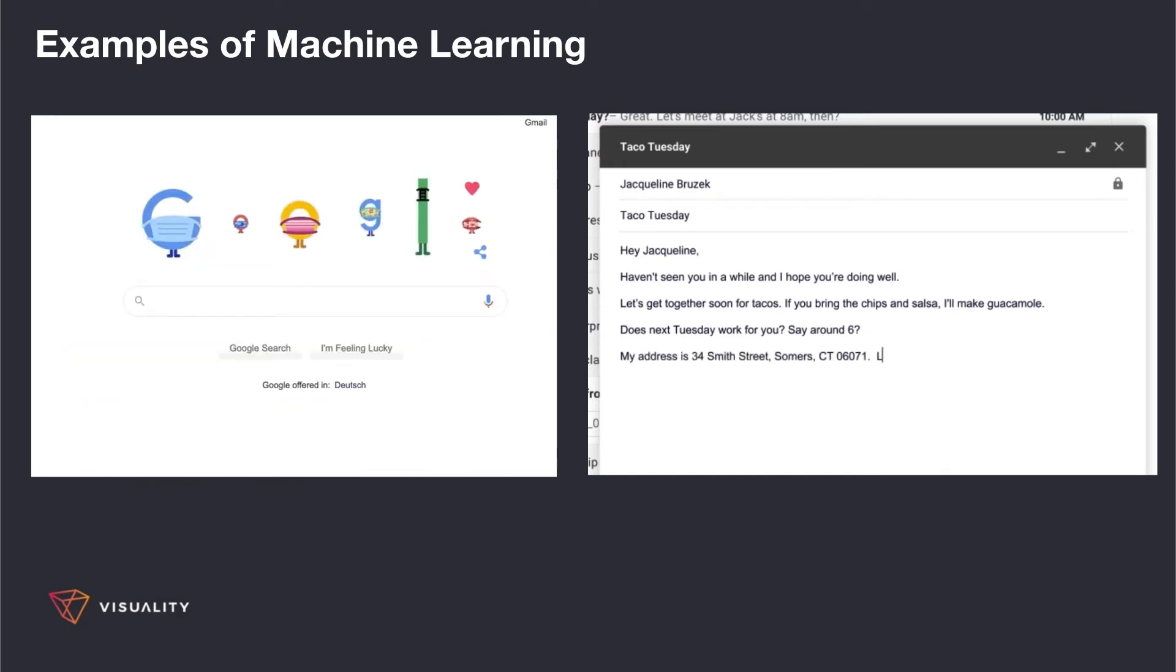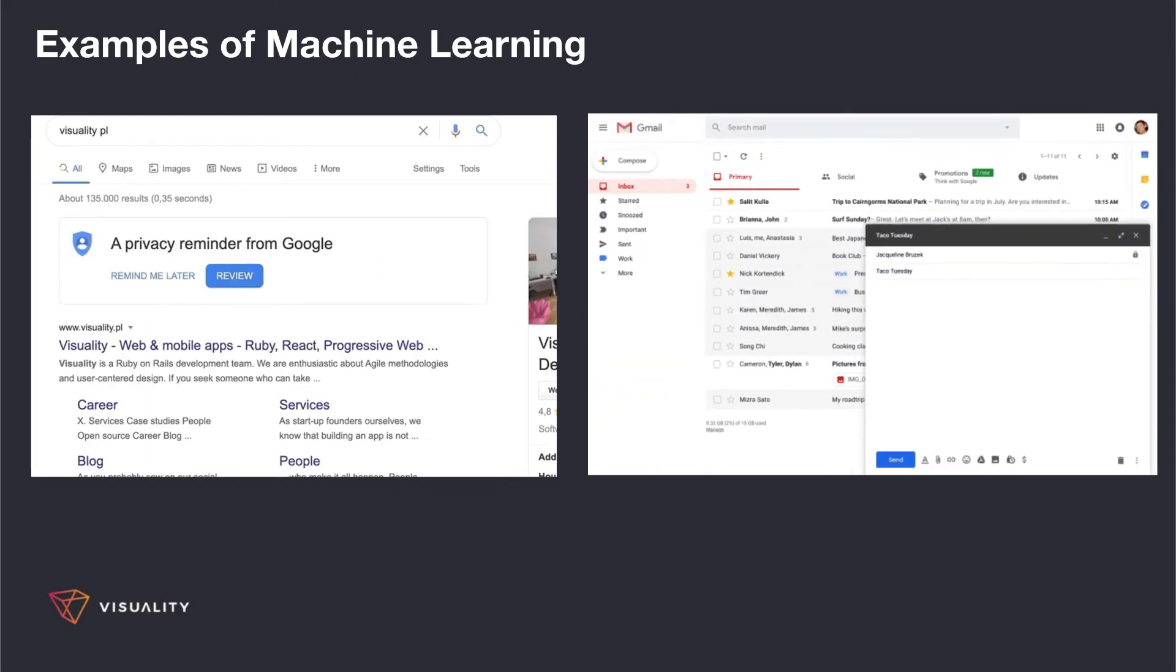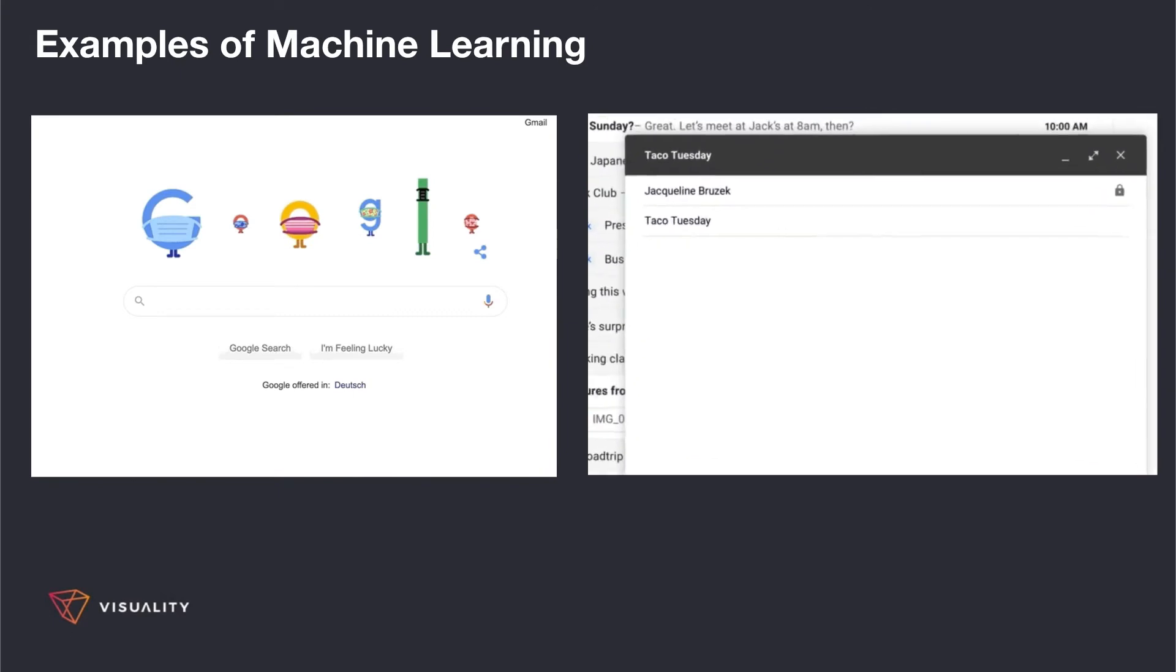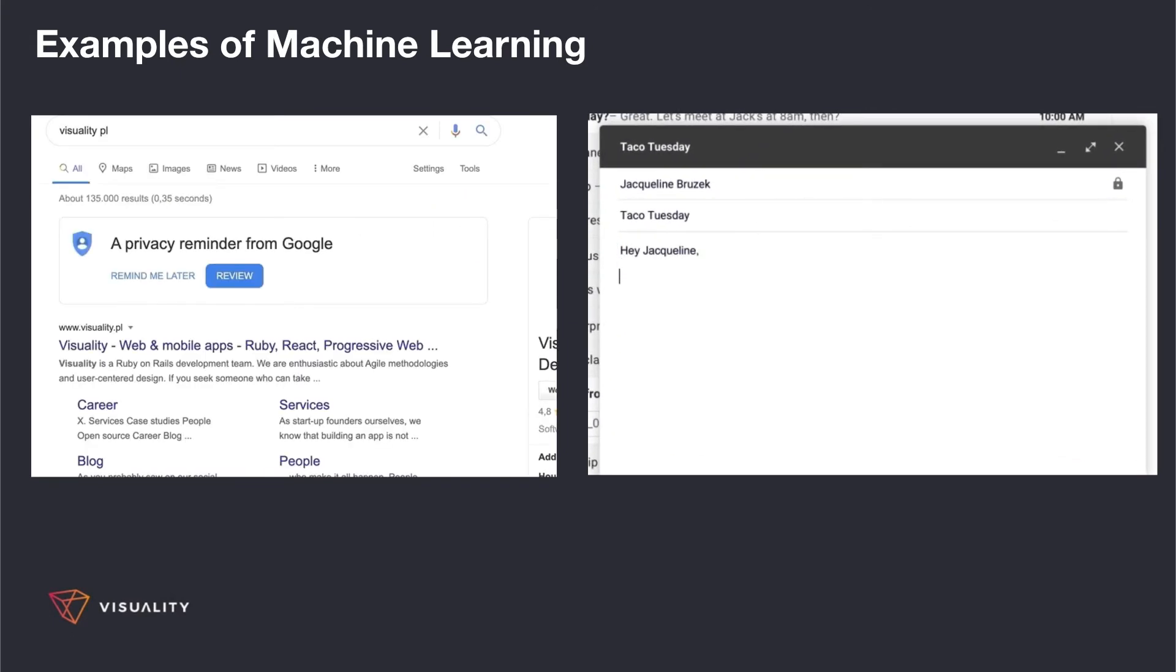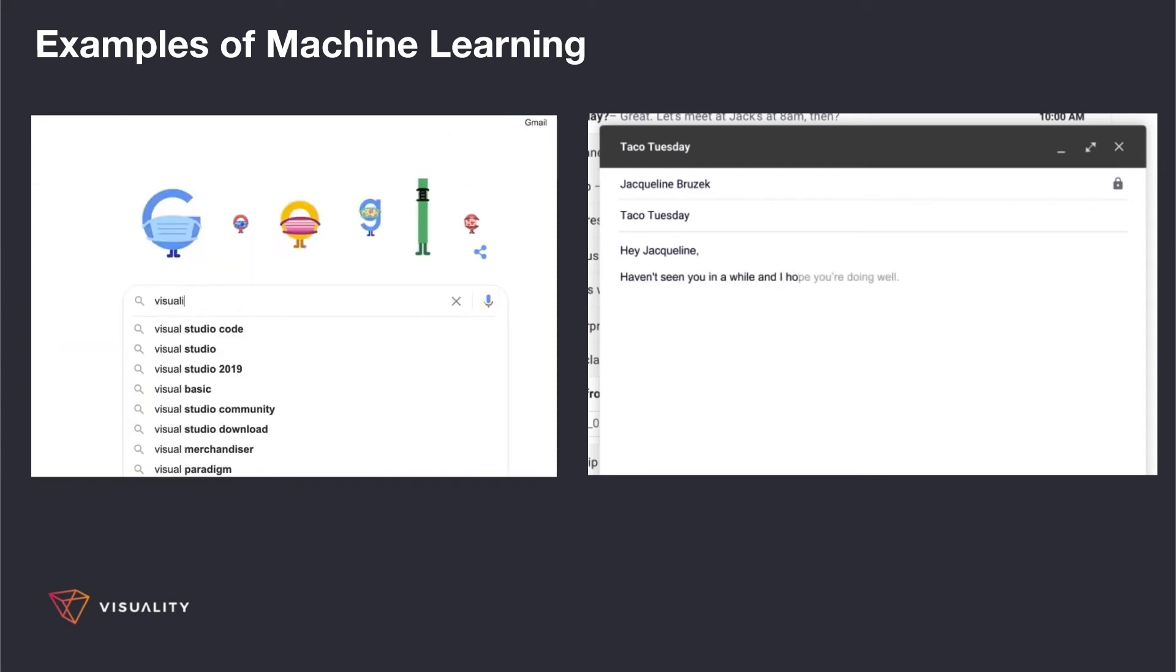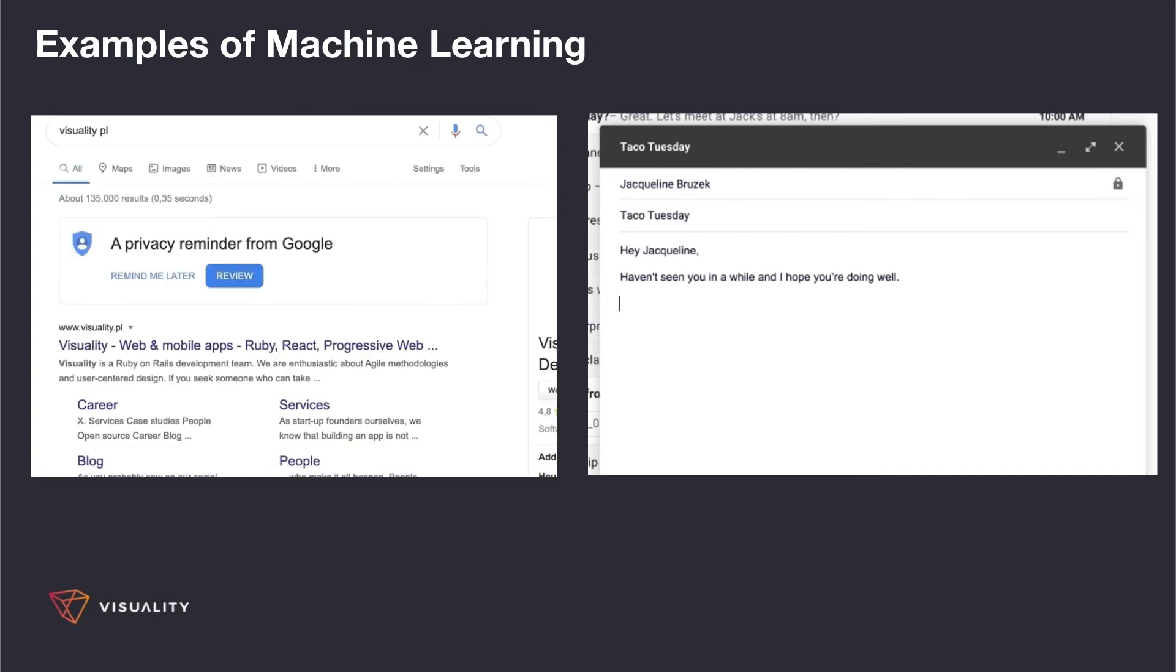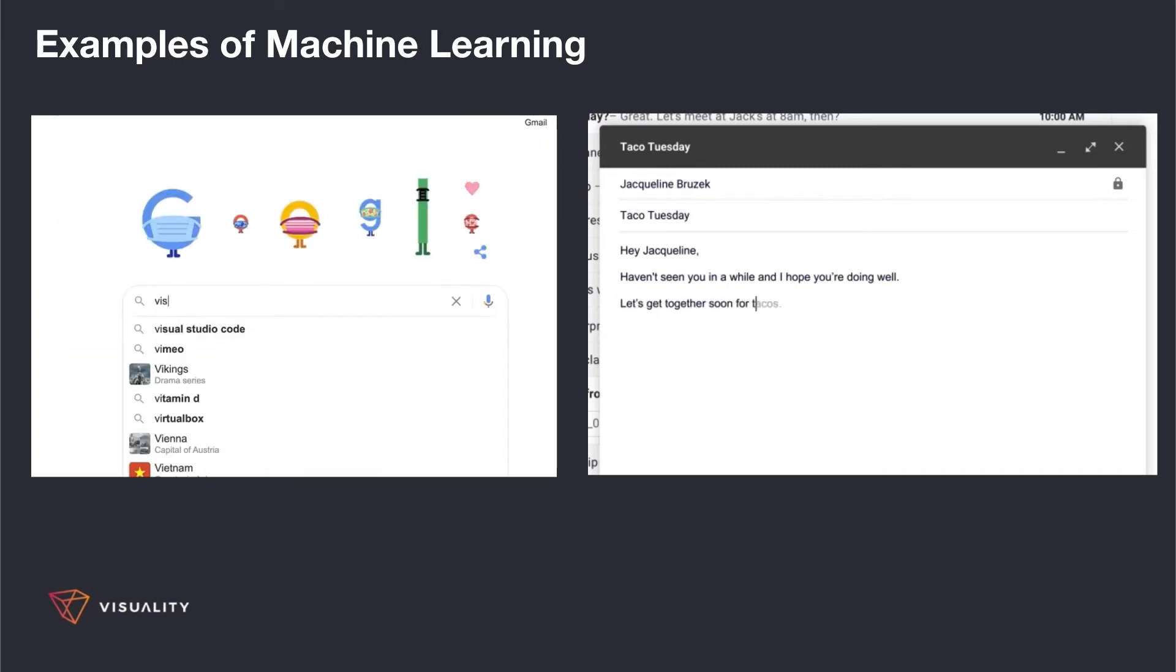From understanding the text of your query to adjusting results based on your personal interests, such as knowing which results to show you first. Another example from Gmail: Smart Compose is a feature in Gmail that uses machine learning to interactively offer sentence completion suggestions as you type, allowing you to draft emails faster.